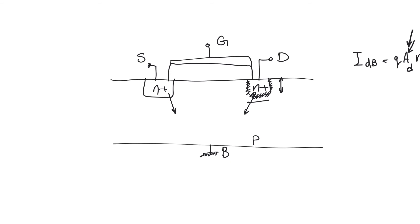The first is gate tunneling current — a current that flows from the gate to the body. It is an electron flow that moves through the oxide, which should be an insulator, and as we will see, this flow happens despite the existence of a large energy barrier, due to quantum effects that are a bit hard to understand.